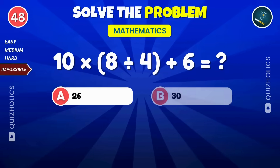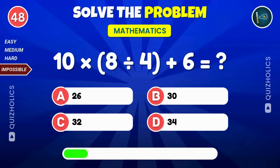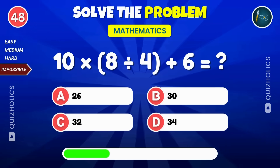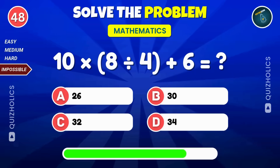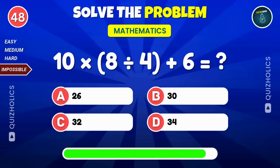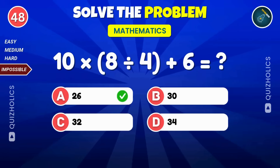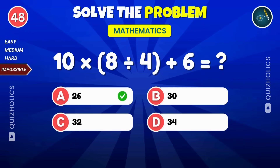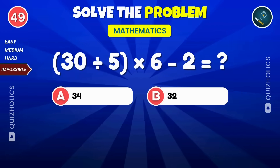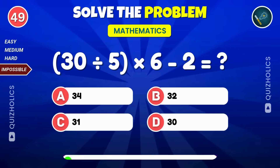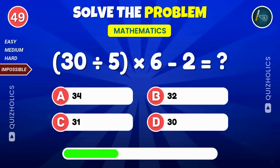Here's a tough one: 10 times 8 divided by 4, then add 6. Challenge yourself: 30 divided by 5, multiply by 6, then subtract 2.